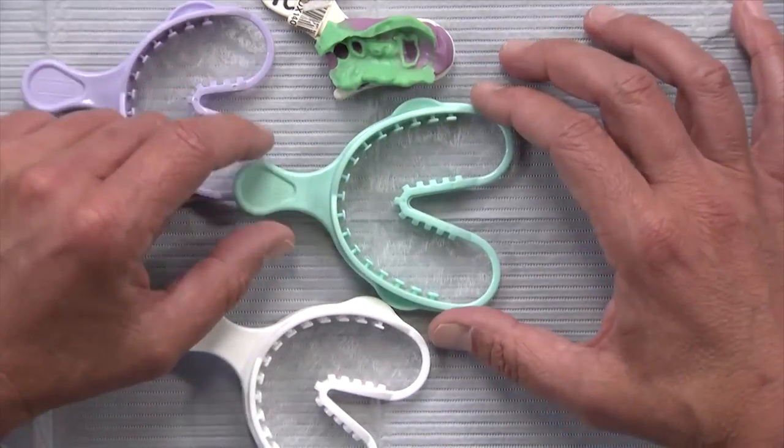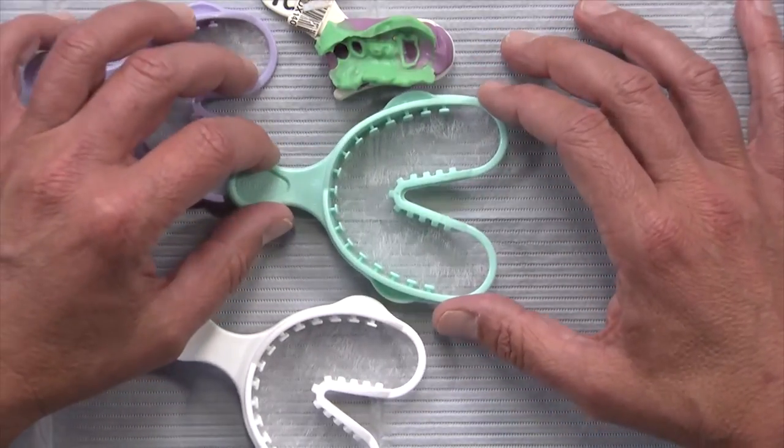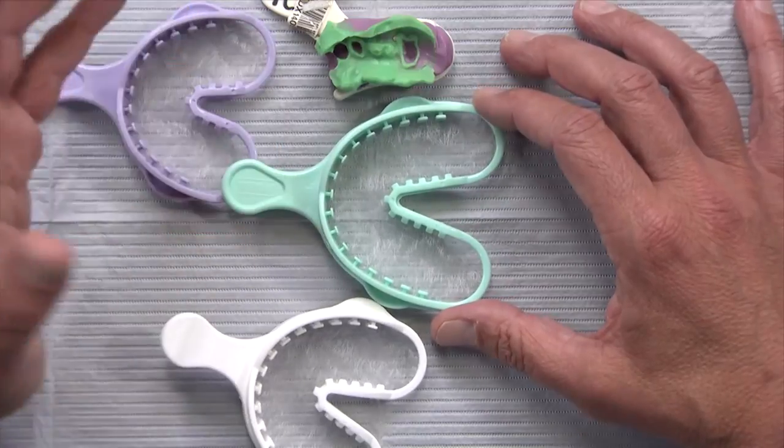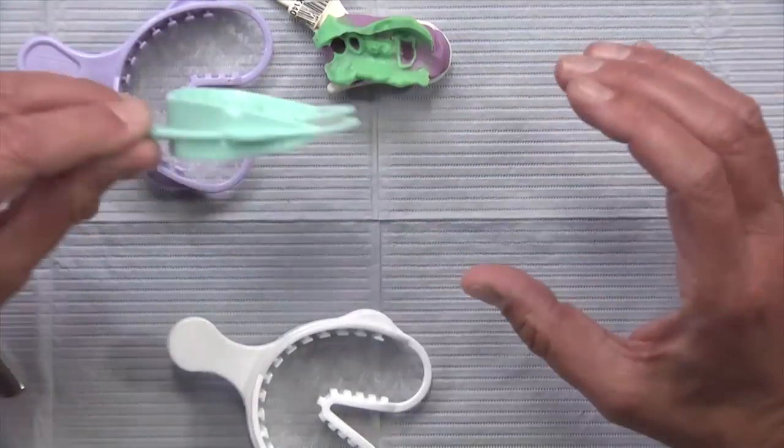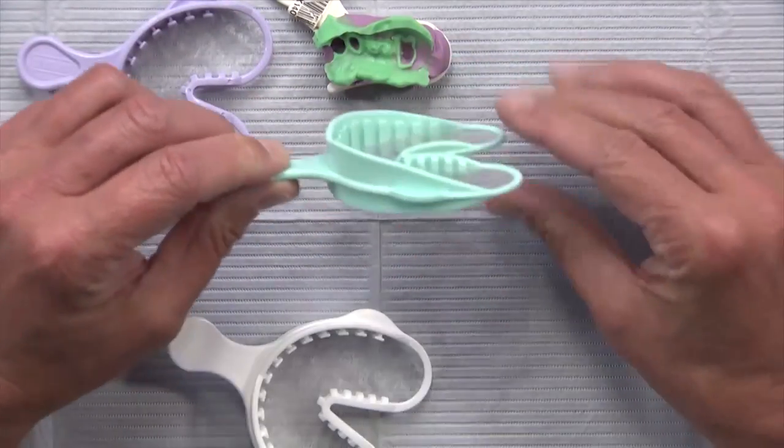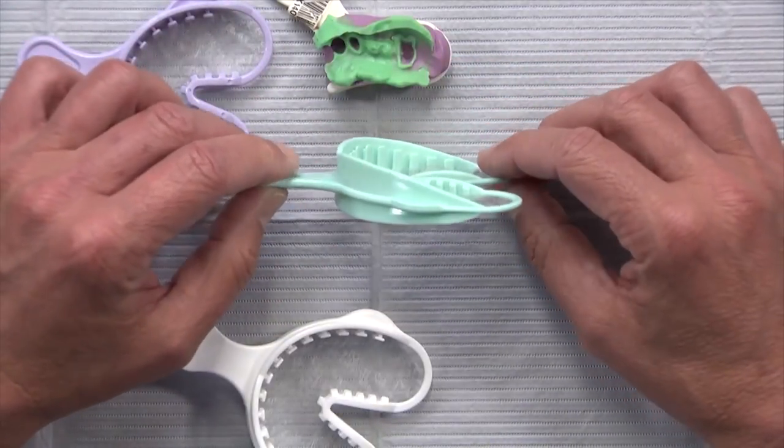Now again, this tray was designed for alginate. And so typically what I use these for, we just made a sports guard for my son who plays ice hockey. We fill both sides of this with an alginate replacement material, goes in his mouth, bites together and holds it and it takes care of two impressions at the same time.